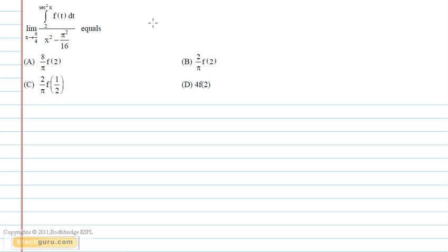In this question, we can see that the limit x tends to π/4 of the upper limit of the integral secant square x is also 2, which is the same as the lower limit 2. Therefore, the whole integral becomes 0.